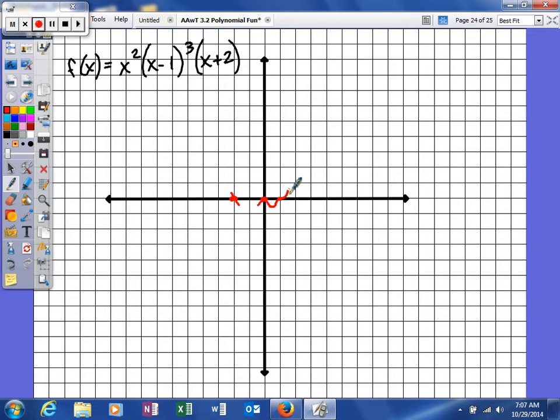So I'm going to plug in a couple values. I'm going to plug in negative 3, negative 1, and probably 2 to figure out where my function is. Usually when the degree is pretty high like this, you're going to see some pretty extreme values.